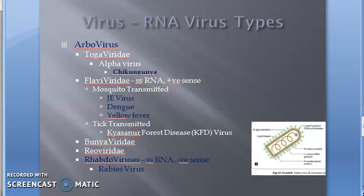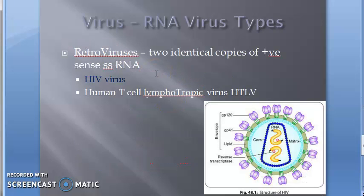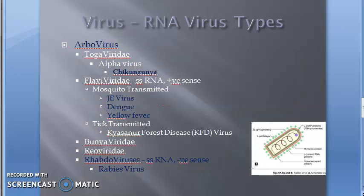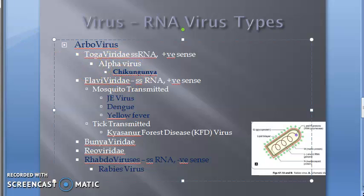Arbovirus — we have togaviridae, under which you have alphavirus, specifically chikungunya. Chikungunya is not caused by chicken; it is a viral disease transmitted by the bite of an infected Aedes mosquito. Chikungunya comes under the fever-arthritis group.